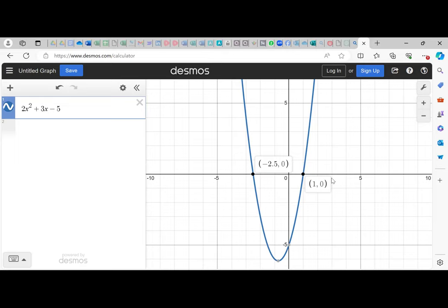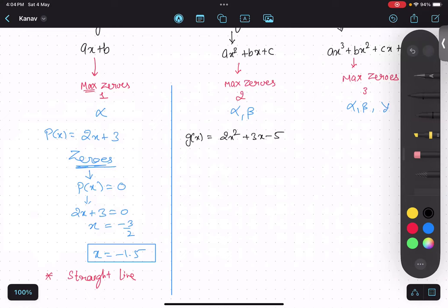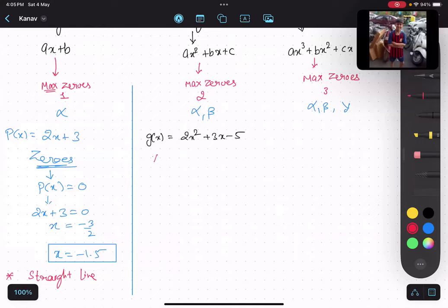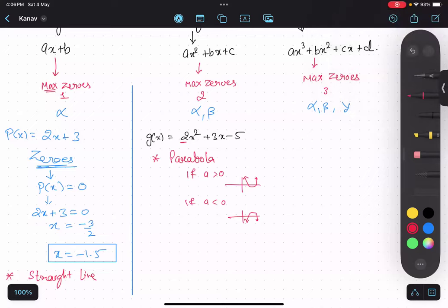So I'll just go back to the other screen. The shape of the graph is parabola. Now remember one thing. If this a is positive, then the parabola is generally upside. You can use this Desmos tool which I was showing to visualize how the graph is looking.